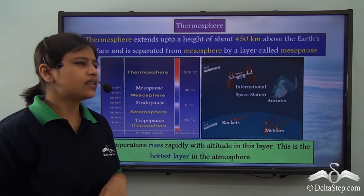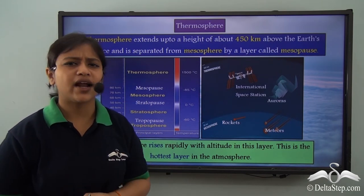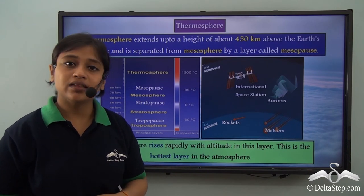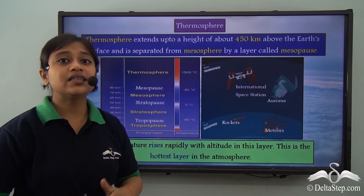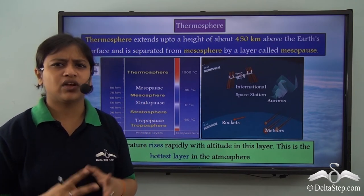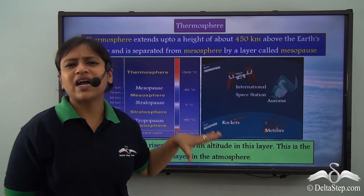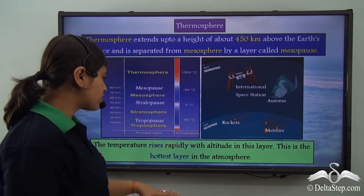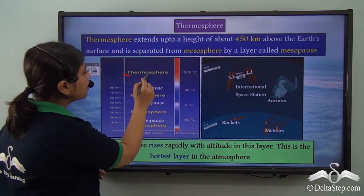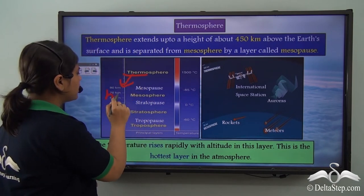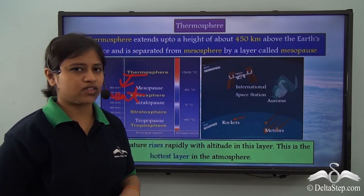The mesosphere is the coldest layer of the atmosphere, while the layer just above it — the thermosphere — is the hottest layer. This is because the temperature starts rising rapidly with altitude in this layer. From the very word 'thermo', which is related to heat, we know that this is the hottest layer of the atmosphere.